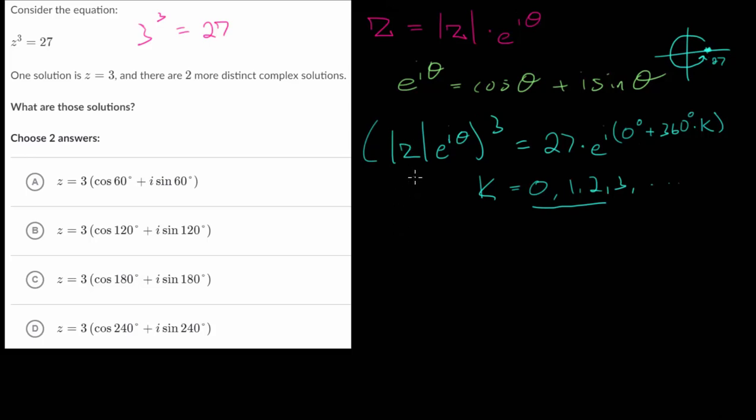So on the left-hand side, we can simplify. We are raising each of these in this product here, each of these factors to the third power. So we get the magnitude of z cubed, and we have an exponential expression raised to the third power, and raising an exponent to an exponent, we would just multiply. So on the left-hand side, we have this, and on the right-hand side, we have this same expression. I'll just rewrite it as 0 degrees plus 360 degrees times by k.